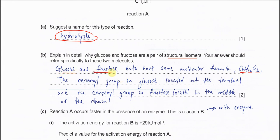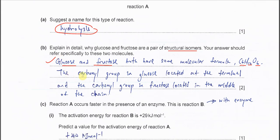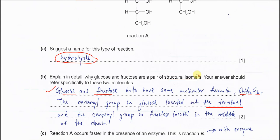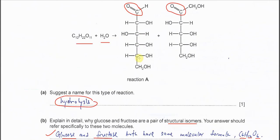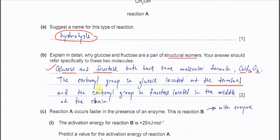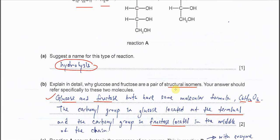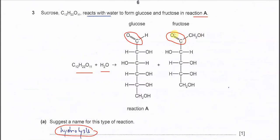You just need to explain something like this. Glucose and fructose both have the same molecular formula. This is the first thing that they must have, and you just need to explain the positions of this carbonyl group. Carbonyl group in glucose located at the terminals, here at the first carbon, but the carbonyl group in fructose is located in the middle of the chain.